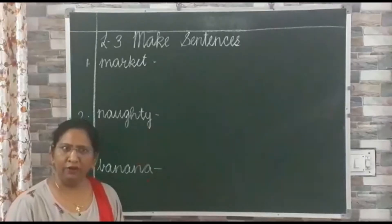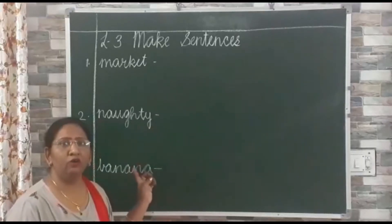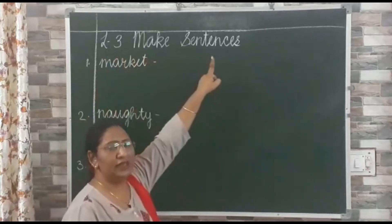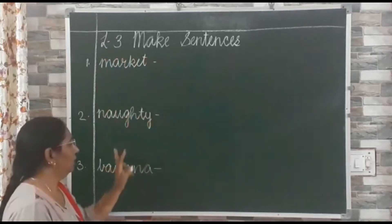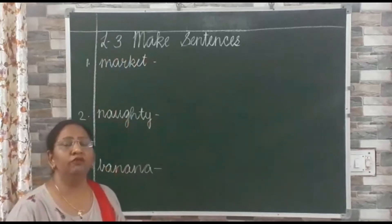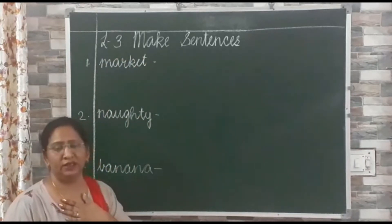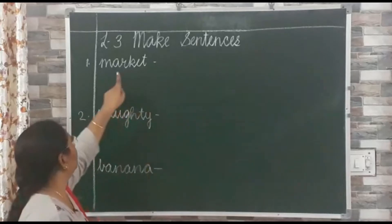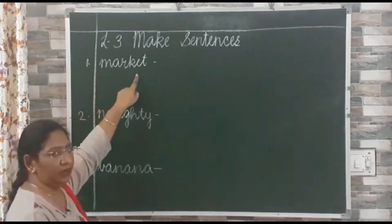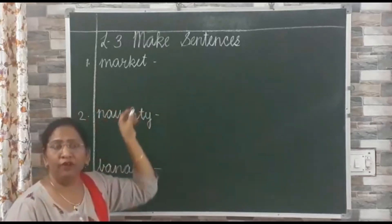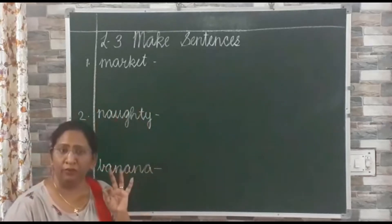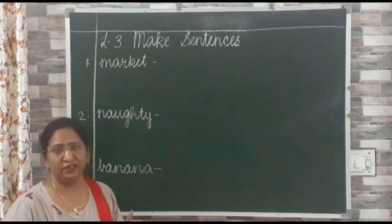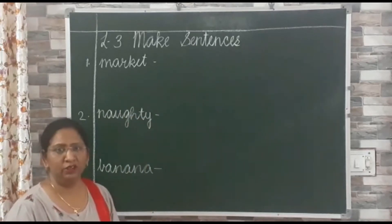Understood? After doing question answers, turn the page and take a new page. On that page, in the first line, write down: Lesson number 3 — Make Sentences. Children, here we are giving a few words. What we have to do? We have to make our own sentence. That means we don't have to copy down the sentence from the chapter.